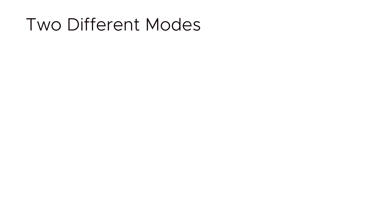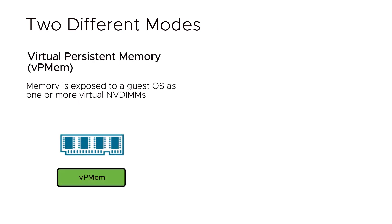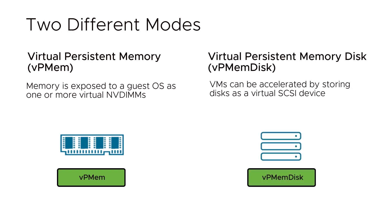You can use PMEM with virtual machines in two different ways. You can use virtual persistent memory, or vpmem, so that the memory is exposed to a guest OS as one or more virtual NVDIMMs. You can also use virtual persistent memory disk, or vpmem disk, where the memory is accessed by the guest OS as a virtual SCSI device. When you use vpmem disk, the virtual disk is stored in a PMEM data store.